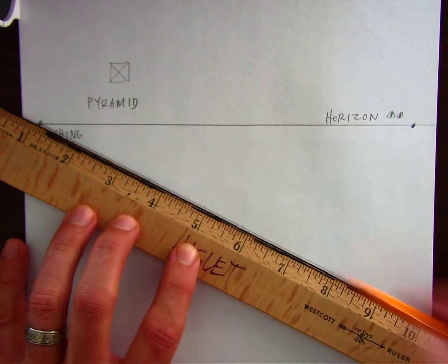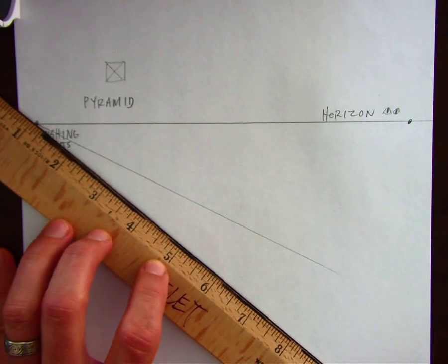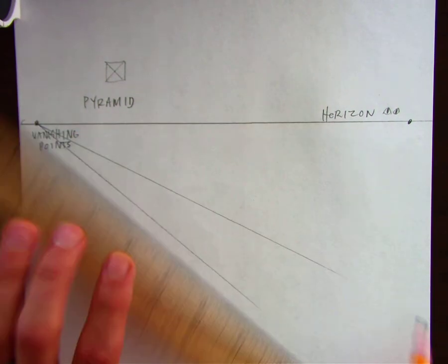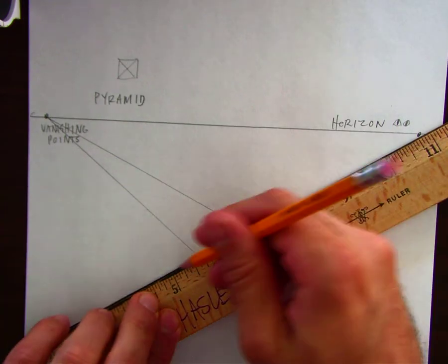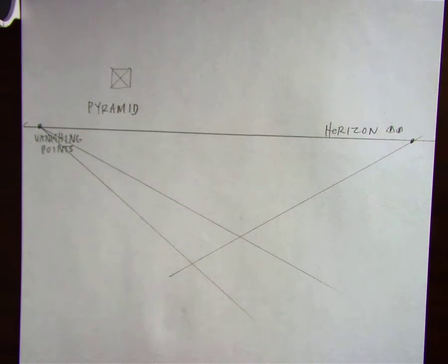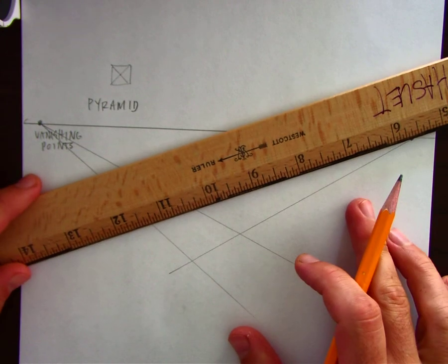You need two lines, light tracer lines going to each vanishing point. That's two going to the left. Now I'll do two to the right. And wherever they cross over, that will be my square.